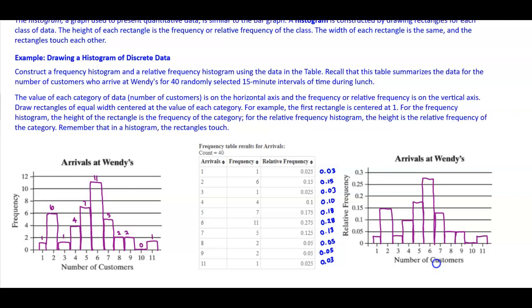Let's label all the values: 0.03, 0.15, 0.03, 0.10, 0.18, 0.28, 0.13, 0.05, 0.05, 0.00, and 0.03. Therefore, we've created a frequency histogram on the left and a relative frequency histogram on the right.